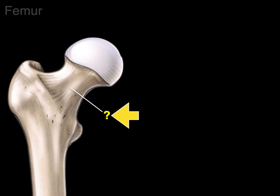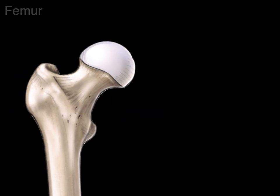Next, we have this neck at the bottom of the head. The neck of the femur makes about a 125-degree angle with the shaft of the femur. That's where a lot of the forces are transmitted — weight down from the trunk down into the thigh.